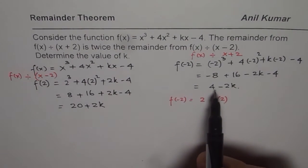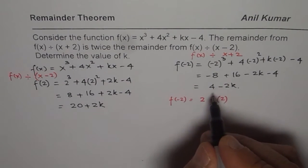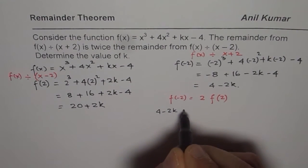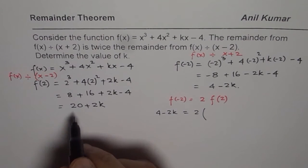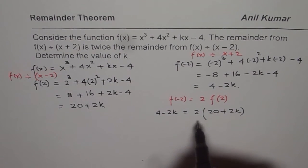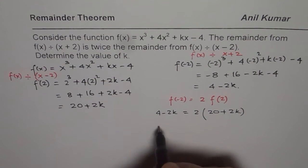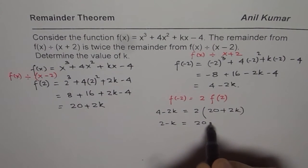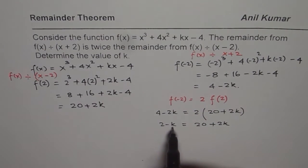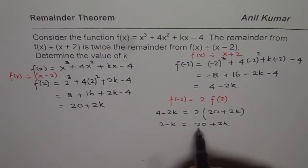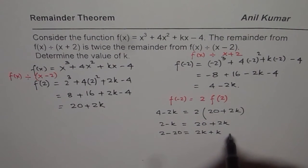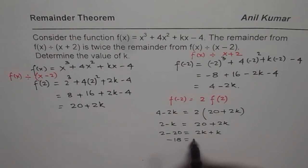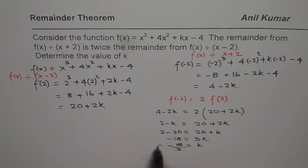So let us substitute. We have 4 minus 2k equals 2 times the quantity 20 plus 2k. We can first divide both sides by 2, so we get 2 minus k equals 20 plus 2k. Now bringing all the k's together and the numbers together: 2 minus 20 equals 2k plus k, so we get minus 18 equals 3k, or k equals minus 18 over 3, which is minus 6.